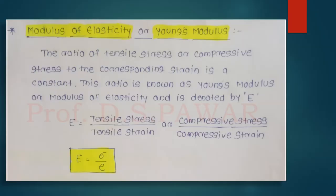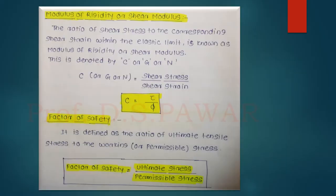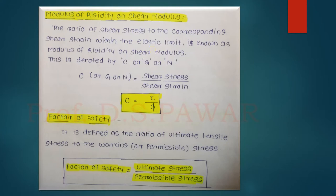Next, after Young's modulus or modulus of elasticity, we have modulus of rigidity or shear modulus. The ratio of shear stress to the corresponding shear strain within the elastic limit is known as modulus of rigidity or shear modulus. The important thing here is the elastic limit. This modulus of rigidity is denoted by C, or sometimes by capital G, or capital N. So C or G or N equals shear stress divided by shear strain.